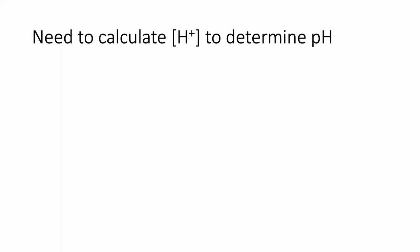To determine the pH of a solution that you are titrating, you need to calculate the H+ concentration. Obviously, you need to know H+ concentration to determine pH. The H+ concentration is determined by the moles of H+ divided by volume — that's the definition of molarity.